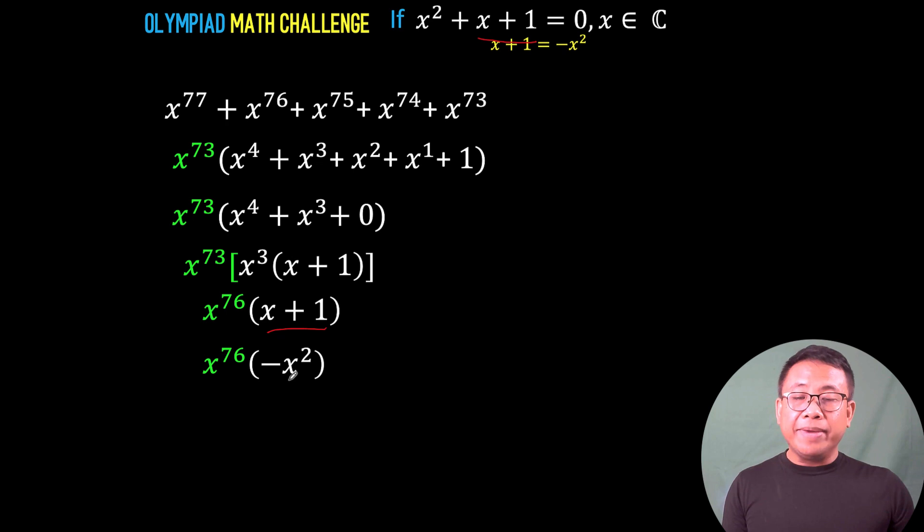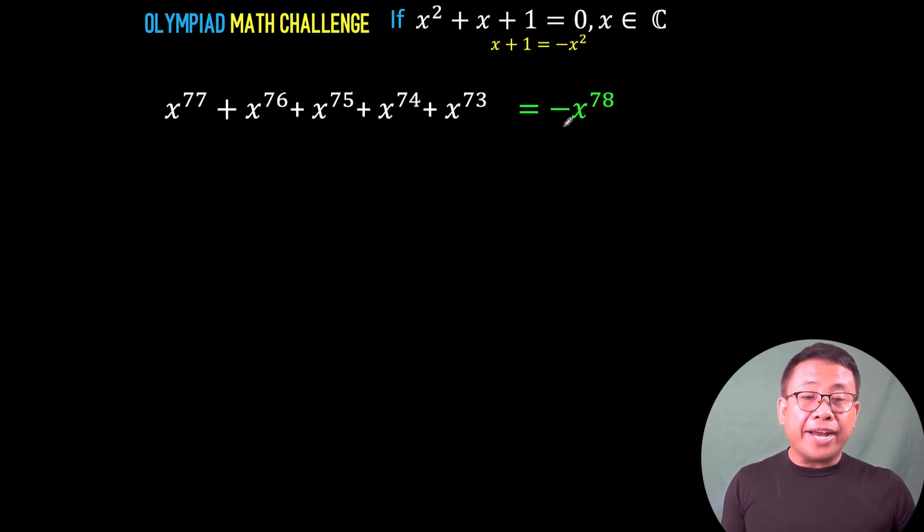And you have here a common base. Think of having a positive 1 here and a negative 1 here. So, positive 1 times negative 1 is negative 1. We copy the common base, and we add the exponents 76 + 2 to get 78. This is now the value of this expression so far.